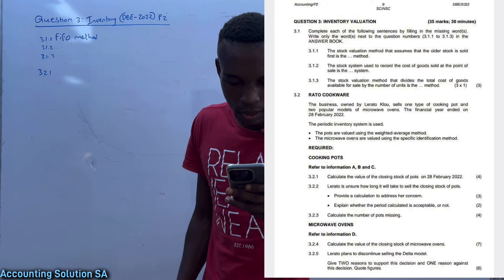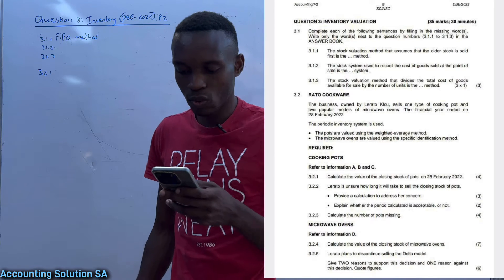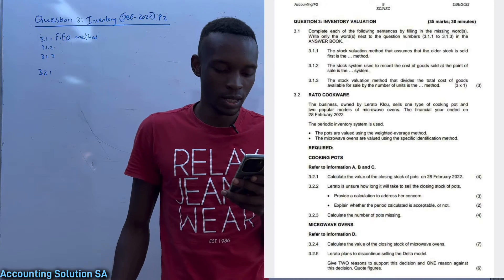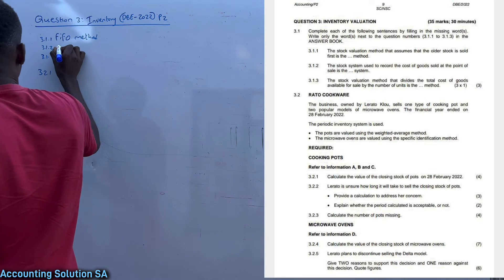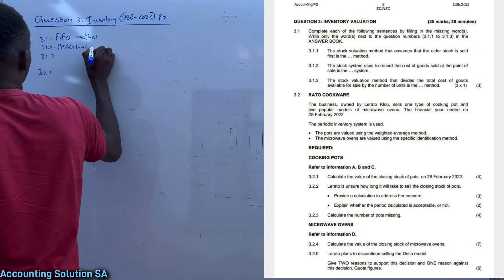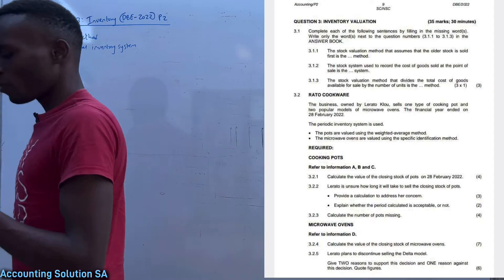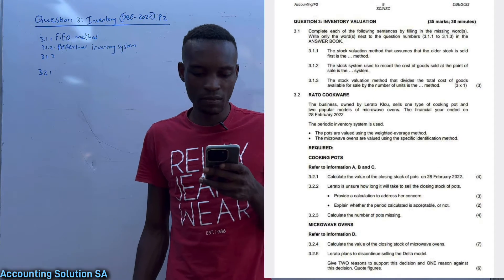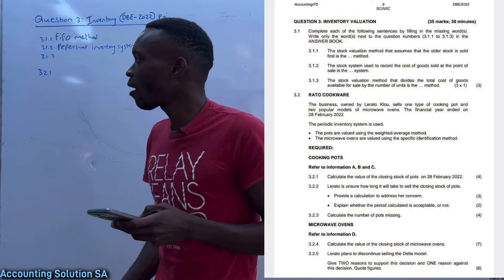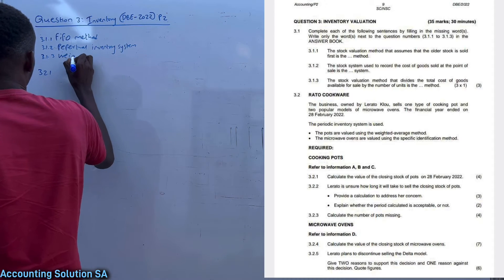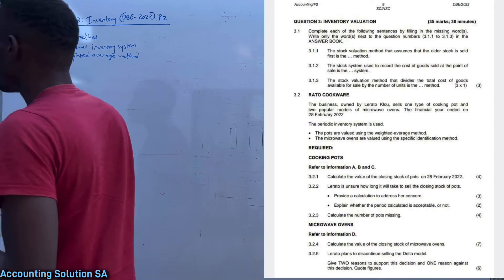3.1.2 — the stock system used to record the cost of goods sold at the point of sale. In other words, the inventory system that records cost of sales at the point of sale is called the perpetual inventory system. 3.1.3 — the stock valuation method that divides the total cost of goods available for sale by number of units is called the weighted average method.